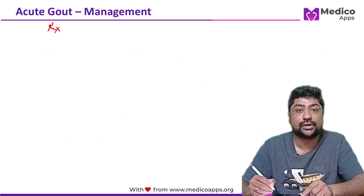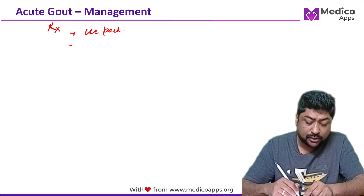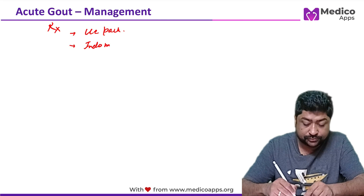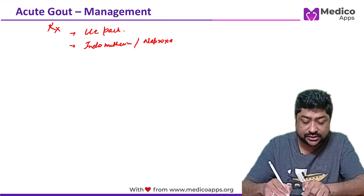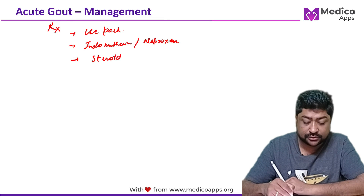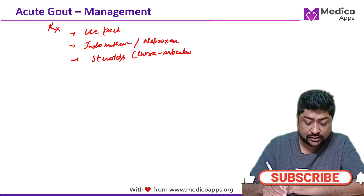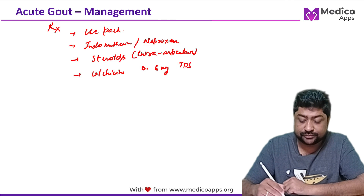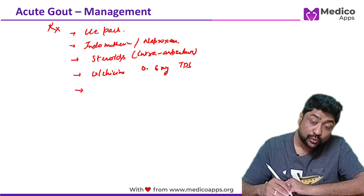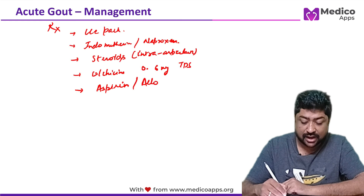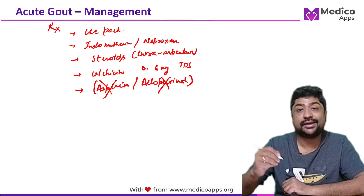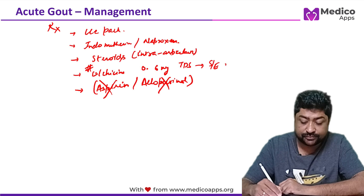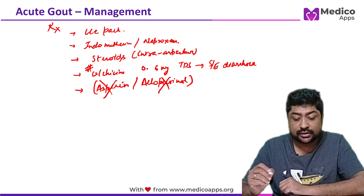For management of acute gout: apply ice packs. Normal COX-2 inhibitors are not effective in reducing inflammation and pain, so use indomethacin or naproxen. Intraarticular steroids can also be given. Colchicine can be given at a dose of 0.6 mg thrice a day. Very importantly, aspirin and allopurinol are contraindicated in acute gout. The side effect of colchicine — frequently asked in exams — is diarrhea, which you must inform patients about.